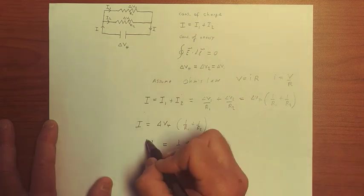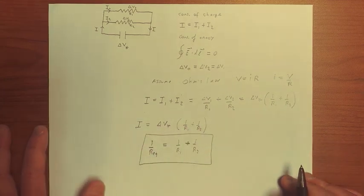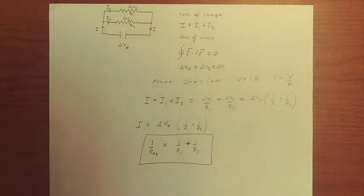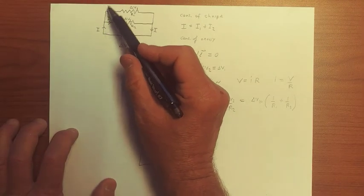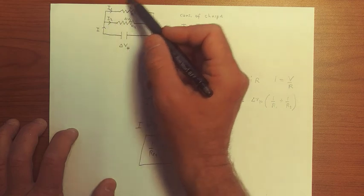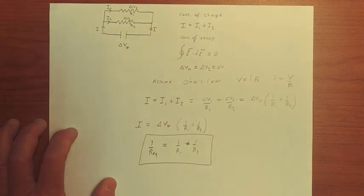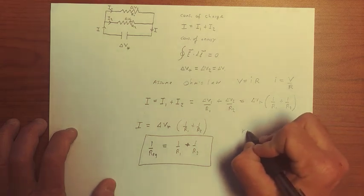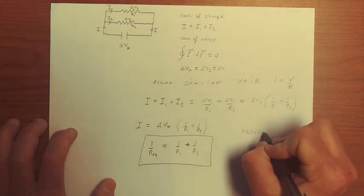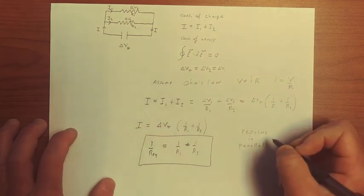And so this is how the resistors add when they are in parallel, meaning that the current can break up. So if we had an additional resistor there, it would just be 1 over R3 and so on. And so now we know how to add resistors in parallel.